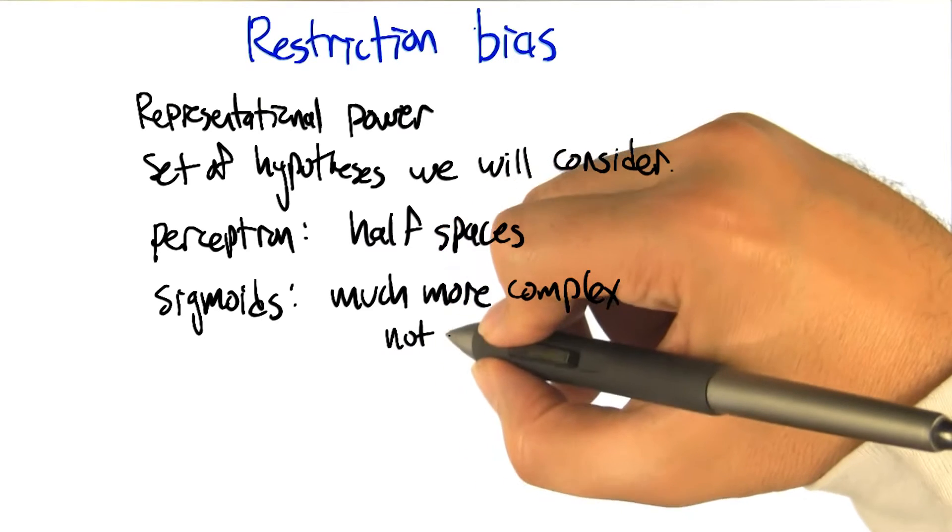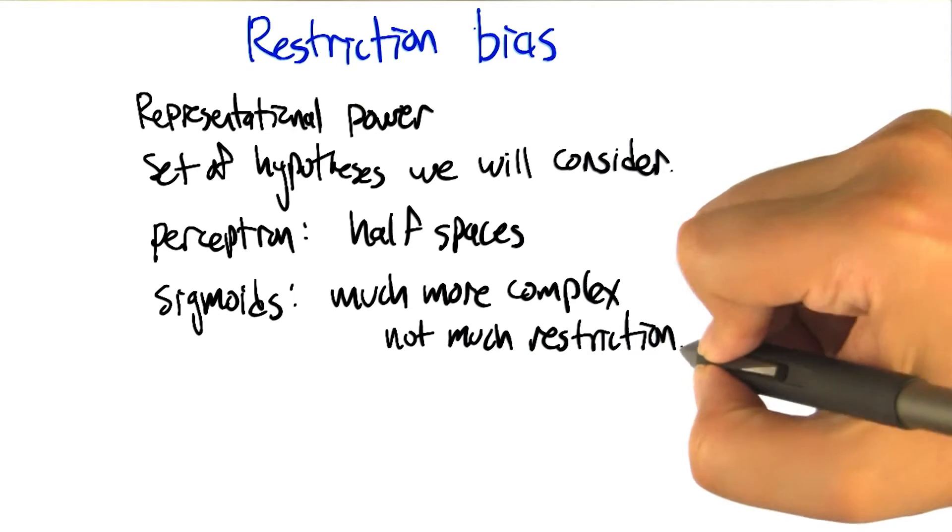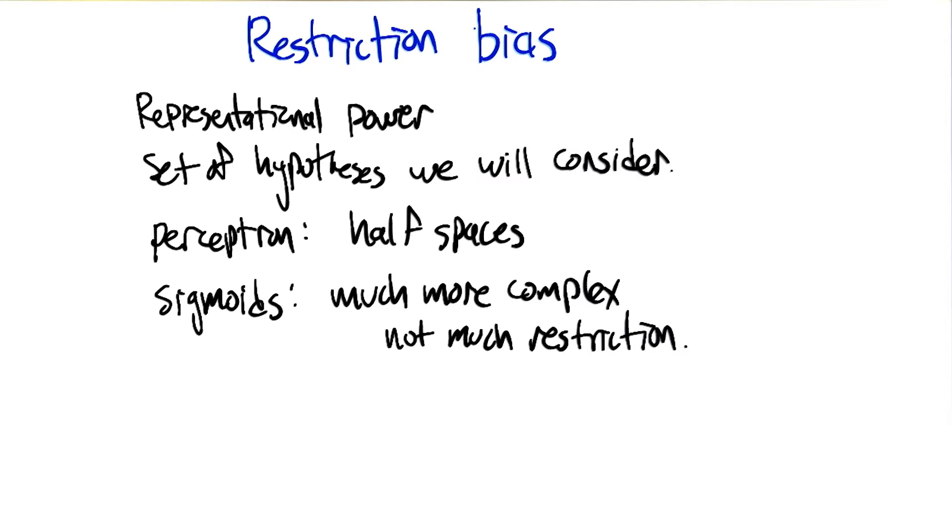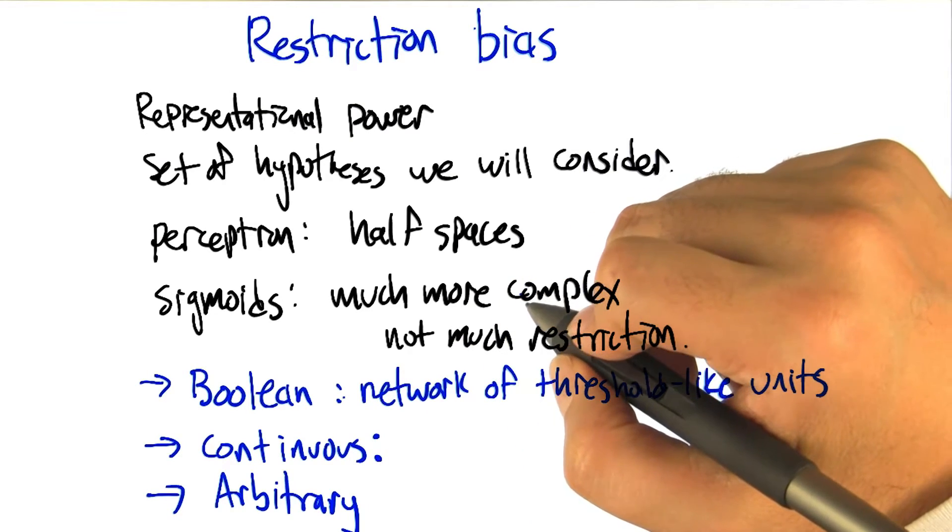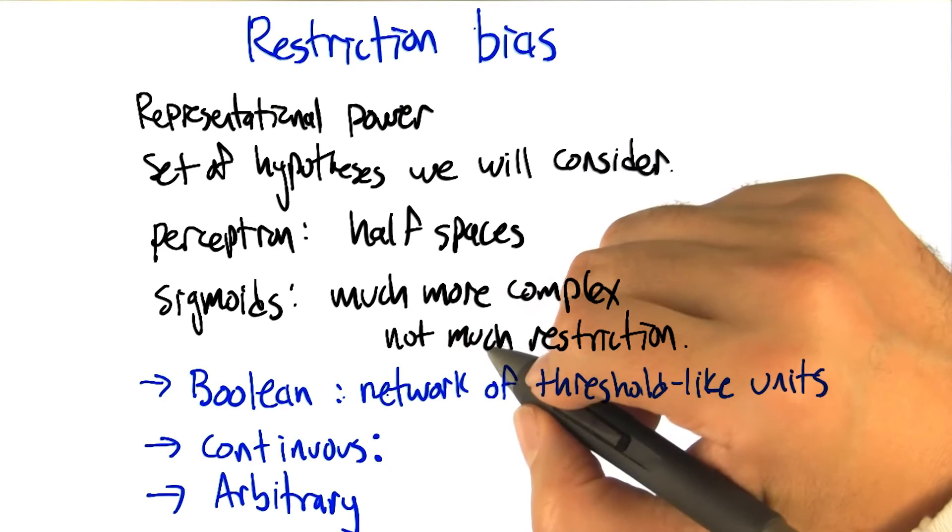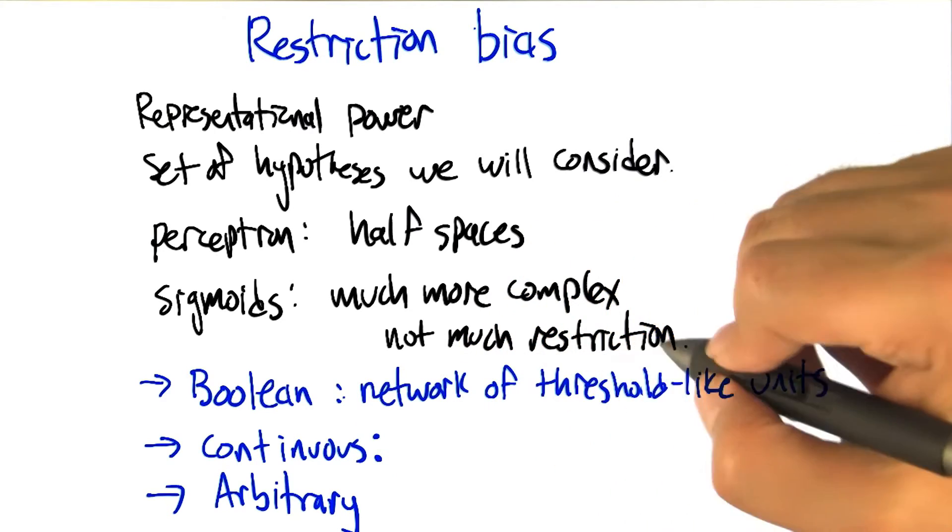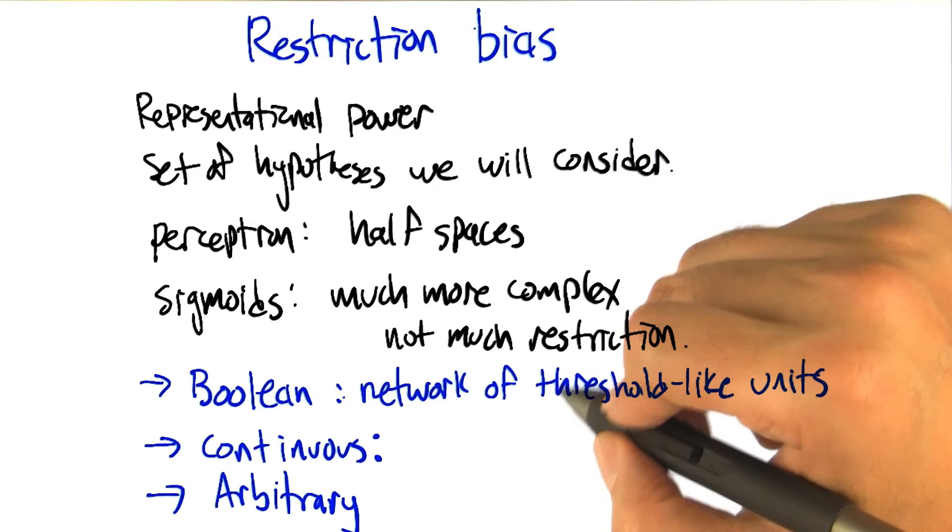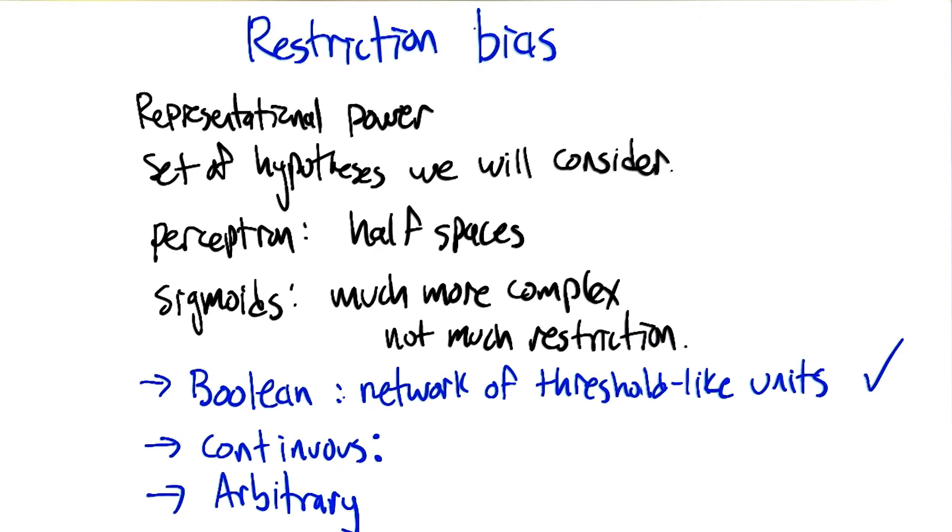So let me ask you this then Michael. What kind of functions can we represent? Clearly we can represent Boolean functions because we did that. Can we represent continuous functions? That's a great question to ask. We should try to figure that out. So in the case, as you said, in Boolean functions, if we give ourselves a complex enough network with enough units, we can basically map all the different subcomponents of any Boolean expression to threshold like units, and basically build a circuit that can compute whatever Boolean function we want. So that one definitely can happen.